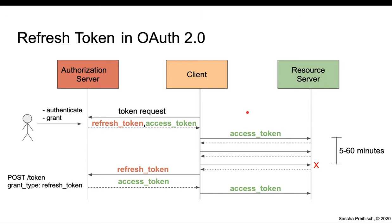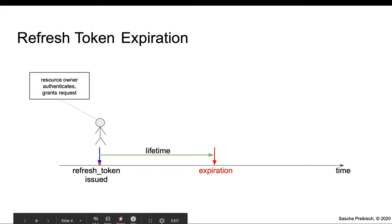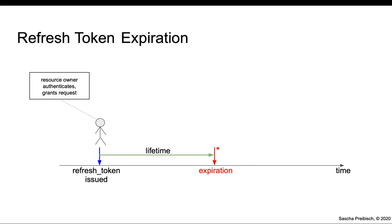In order to manage these user sessions, let's have a look at the topic of expirations. A user authenticates and grants a request, and the Refresh Token gets issued the first time. This will have a lifetime of a certain amount of minutes, days, or even weeks, and there's an expiration time. As soon as a client would use this Refresh Token at or after this expiration time, the user would have to get involved again. But let's say the client is using the Refresh Token before it expires.